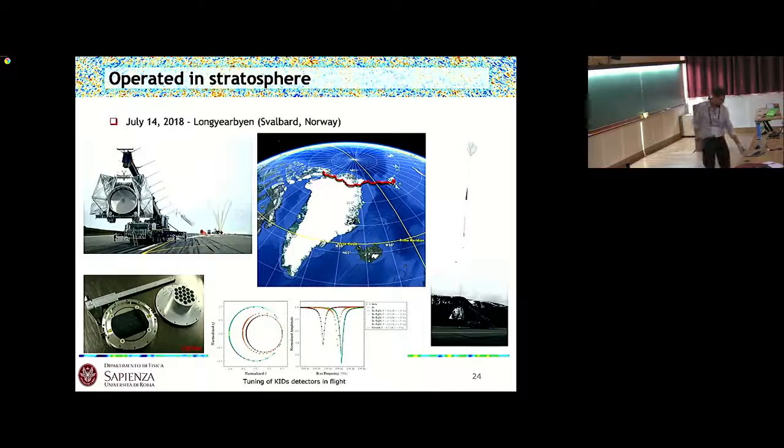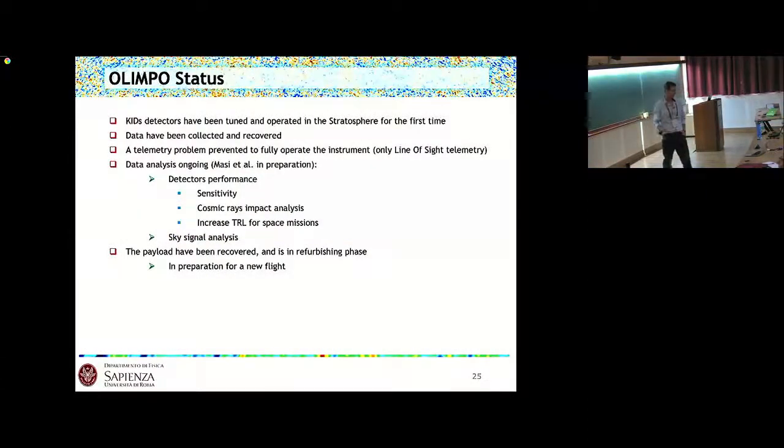This is the trajectory over the North Pole. Those are the detectors. This is in-flight tuning of the KID detectors. So the KID detectors have been tuned and operated in the stratosphere for the first time. This is a good thing because balloons are good to test technology that you want to use for space telescopes. The data have been collected and recovered. There was a big telemetry problem, so basically we could operate only during line-of-sight view of the telescope. Basically the payload went uncontrolled for most of the time. In any case, we have collected the data, we have recovered the instrument and the data, and there is a paper in preparation which will be mainly focused on detector performance. Then we will try to get also some sky scientific data. The payload has been recovered, is in refurbishing phase, to be ready for our next flight.